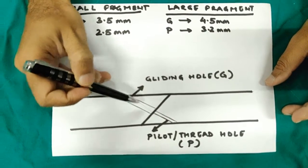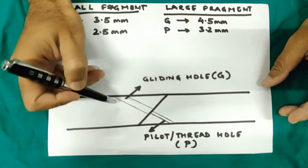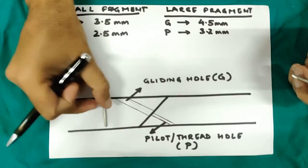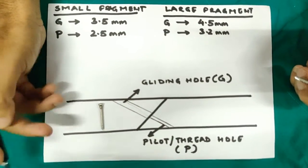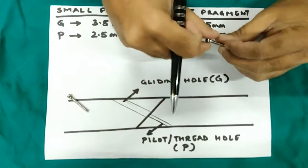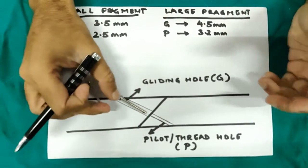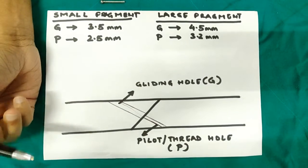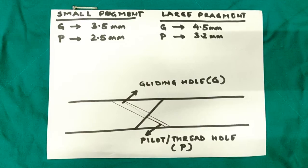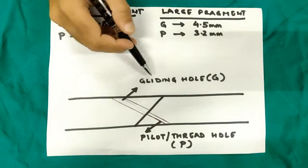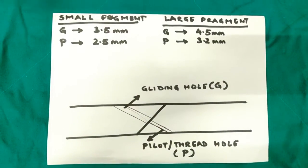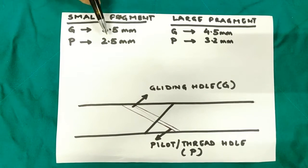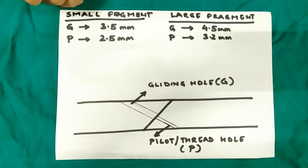The second hole is called a pilot hole. The gliding hole is called a gliding hole because it's big enough for the screw to easily glide in it. For a small fragment screw of 3.5mm, we use a 3.5mm drill bit so the screw can easily glide. For large fragment, you use a 4.5mm drill bit for the gliding hole. The pilot hole is also called the thread hole — for small fragment we use a 2.5mm drill bit, and for large fragment the pilot hole uses a 3.2mm drill bit. To reinforce: small fragment gliding hole is 3.5mm (not 3.2mm, which people commonly think), and pilot hole is 2.5mm. Large fragment gliding hole is 4.5mm and pilot hole is 3.2mm.